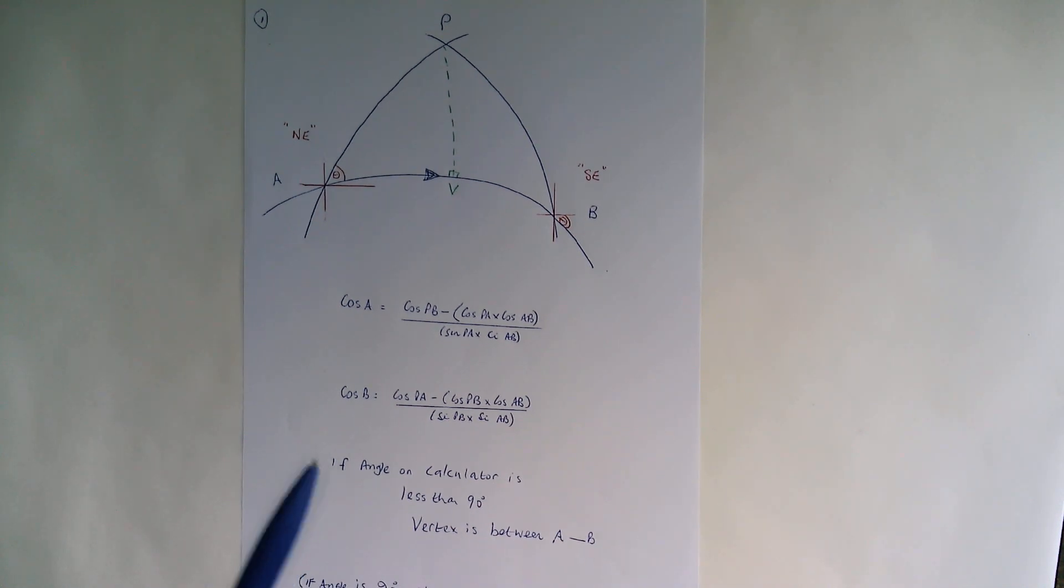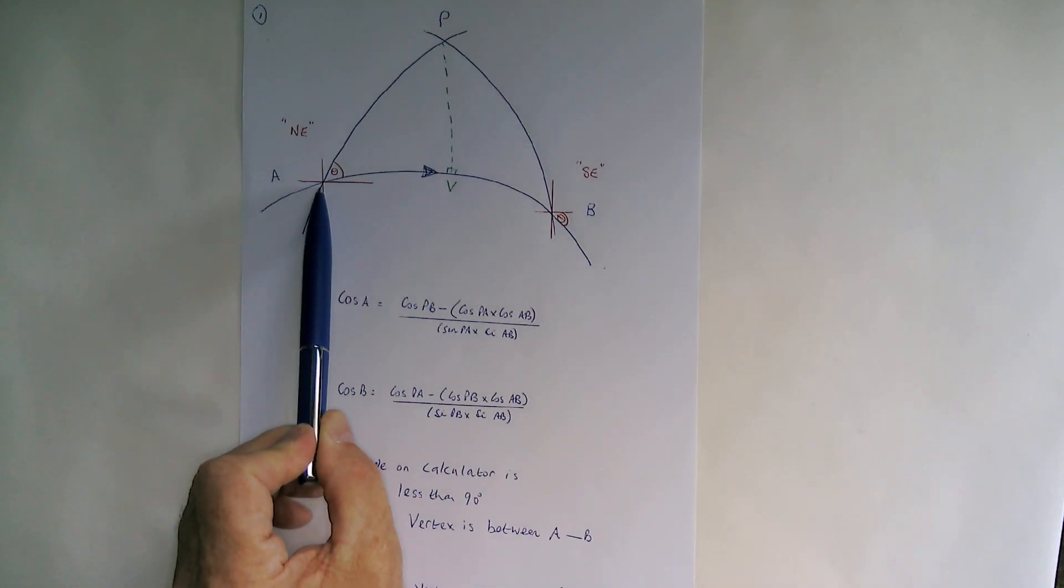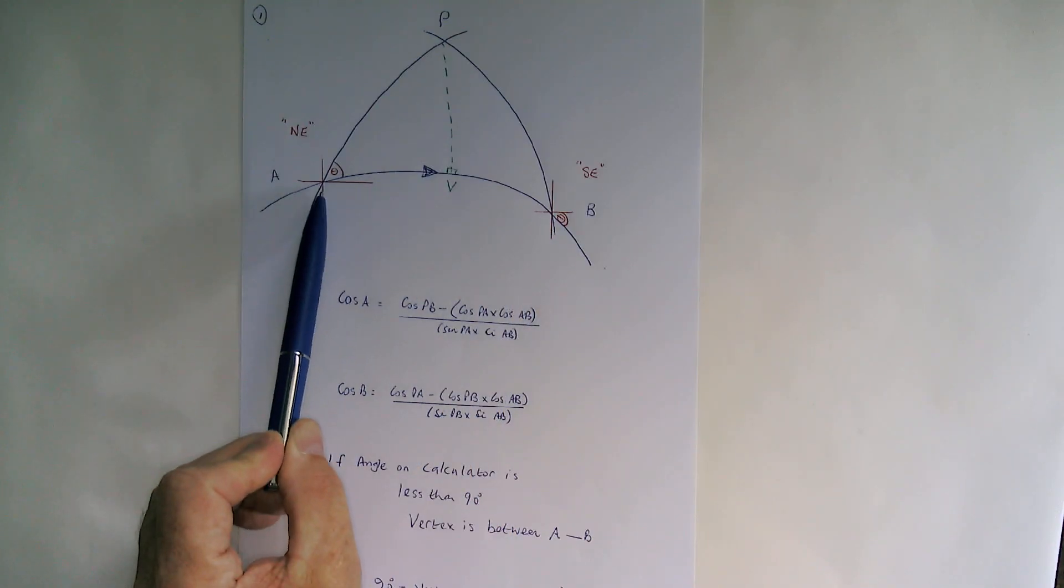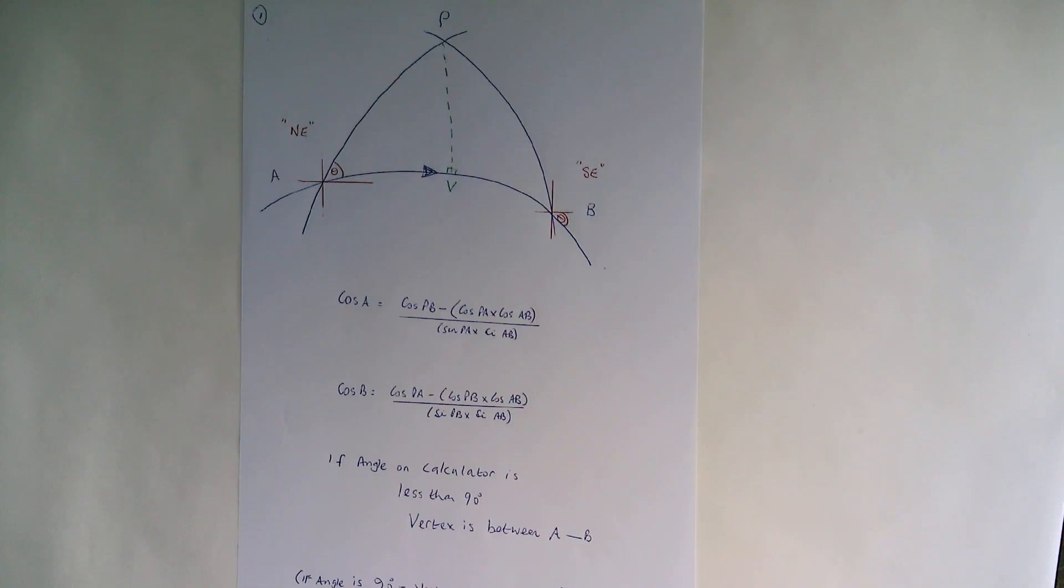So this is how it works. You can see if we're going from this position to this, our initial course quadrantially must be named northeast and the final course southeast. That's how you name them, just simply use those quadrantials and use the formulas.